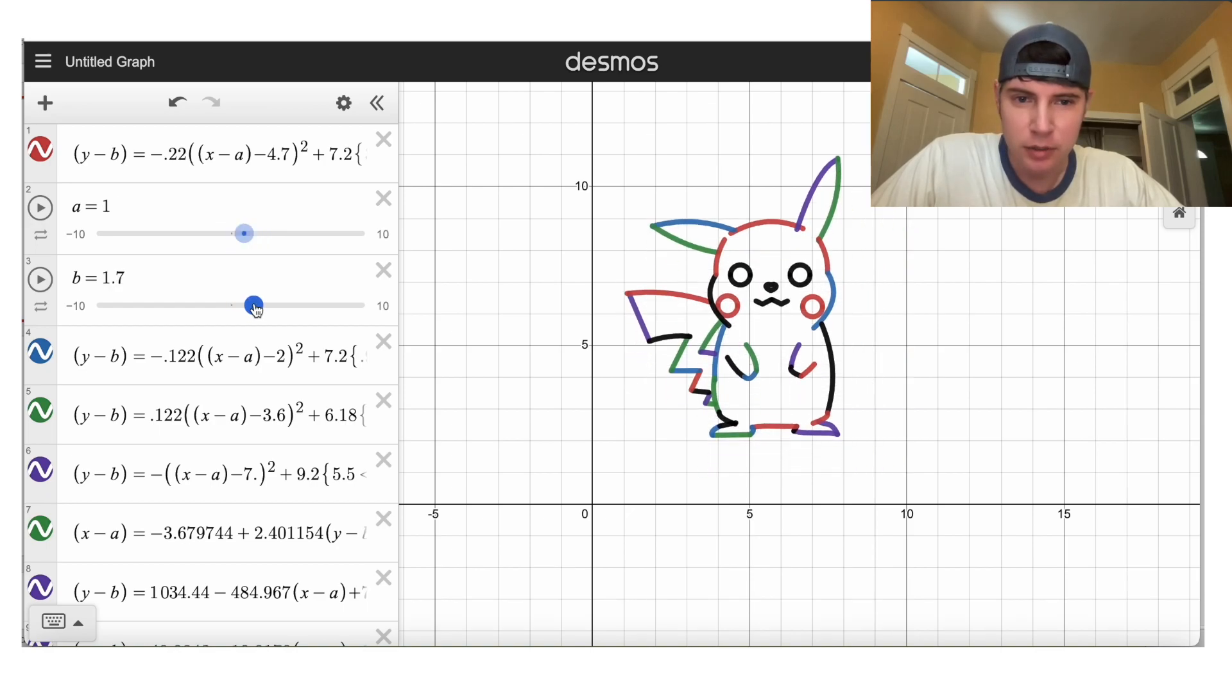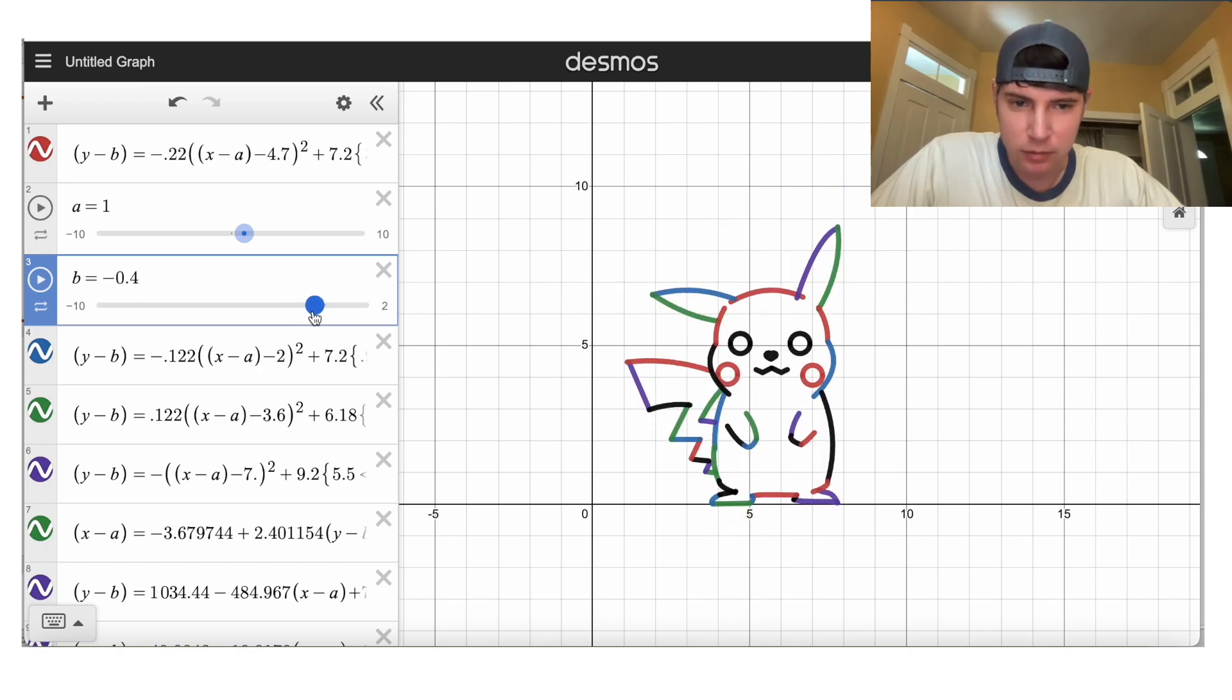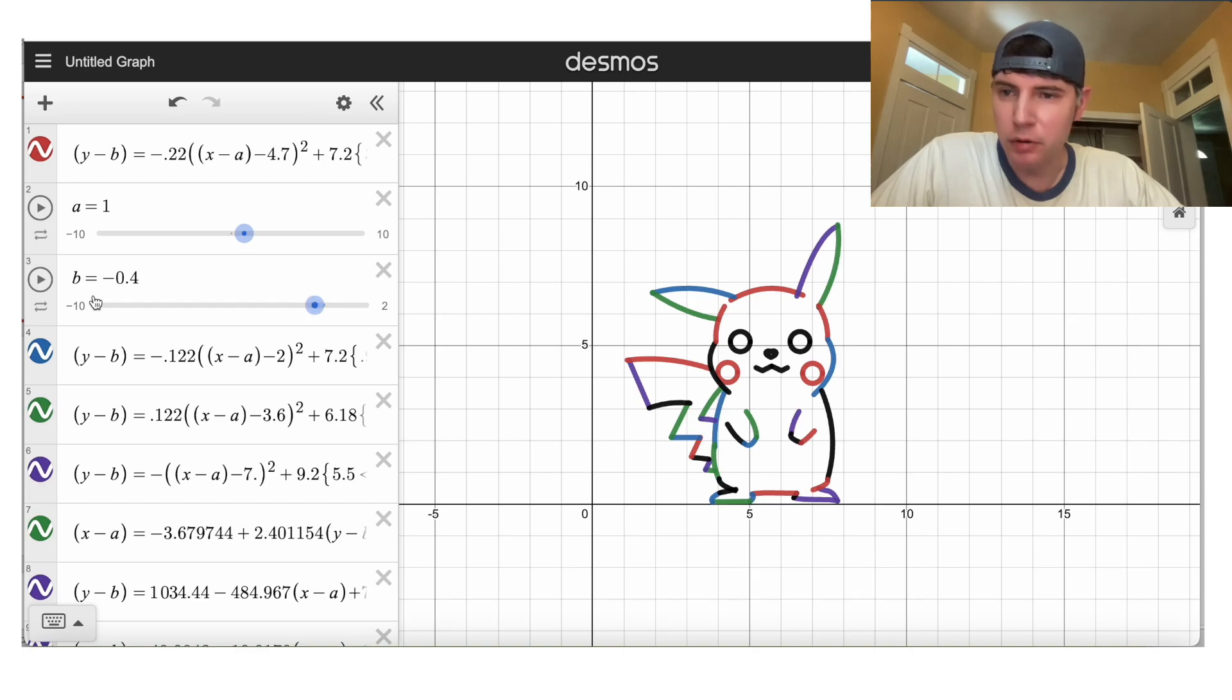So how high do I want him to jump? He can jump up to two. So we'll set the max to two. So I want him to jump on the X axis. So we'll go right there, negative 0.4.